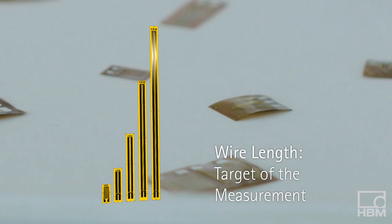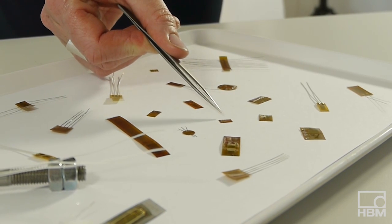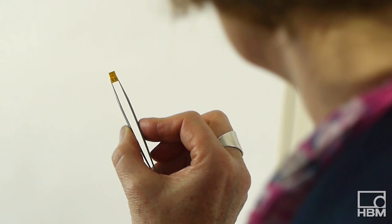The choice of wire length is determined by the target of the measurement. The measurement of an isolated strain requires a wire as short as possible.